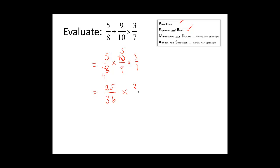We will write the rest of the problem down. Remember when we do problems like this, we make one change and write everything down, keeping each line equal to the previous line. We are multiplying again, so we look for any factors we could divide out in the numerator and denominator. I see a factor of three in the numerator and a factor of three in the denominator, so we will divide them both by three. Three divided by three is one, and 36 divided by three is 12. Now we can multiply across: 25 times 1 is equal to 25, and 12 times 7 is equal to 84. So our answer to this problem is 25 over 84.